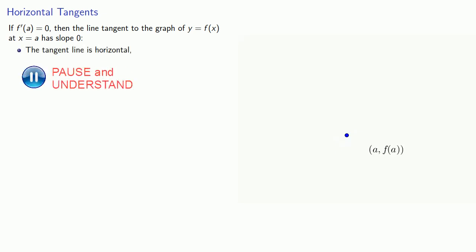If f'(a) equals 0, then the line tangent to the graph of y = f(x) at x = a has slope 0. So the tangent line is horizontal, and since the tangent line is a good approximation to the curve,